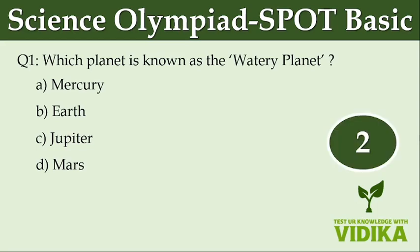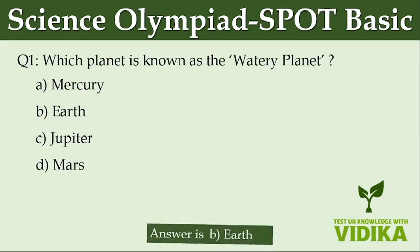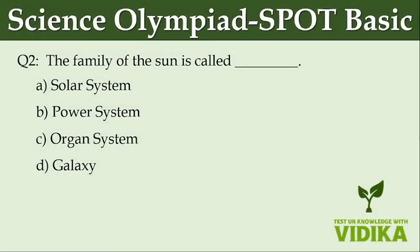The family of the Sun is called dash. Option A: Solar system. Option B: Power system. Option C: Organ system.